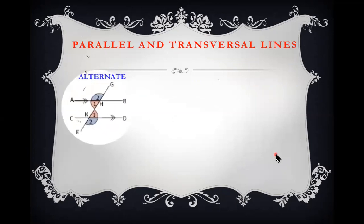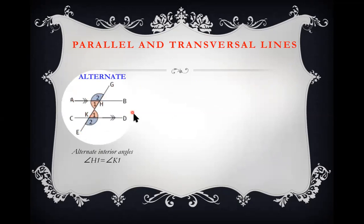Alternate angles are formed when we have two parallel lines and another line cutting across them, which we call the transversal. We look at the Z shape — the letter Z. Angle H1 is equal to angle K1; that is what we call an alternate angle.